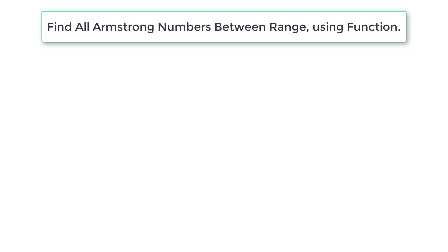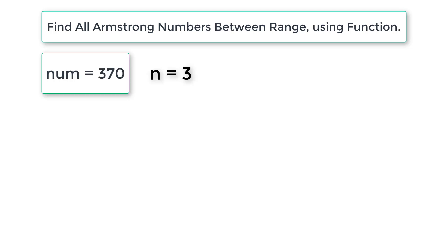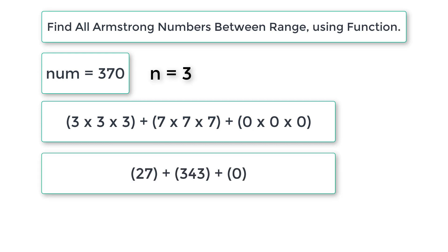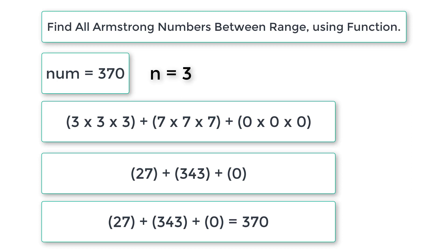Let's write a C program to find all the Armstrong numbers between a user-entered range using functions. If the user enters 370, which has 3 digits — 3, 7, and 0 — we multiply each individual digit 3 times and add them. We get 27 plus 343 plus 0, which equals 370 again. So the result and the user-entered number are equal.